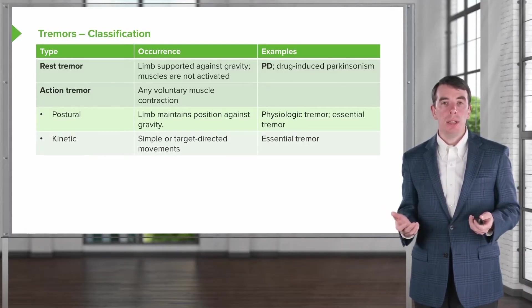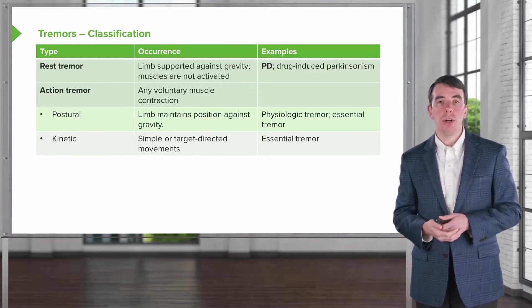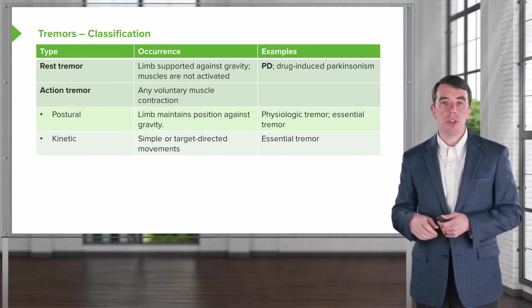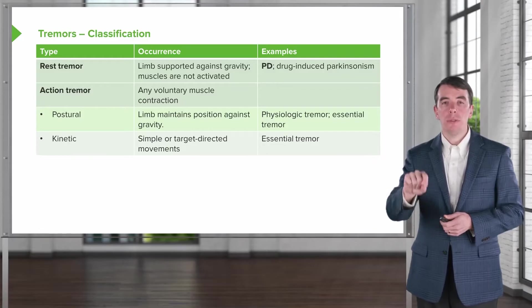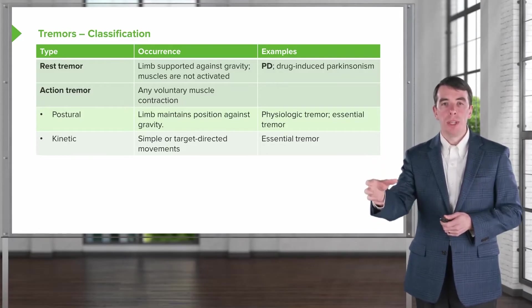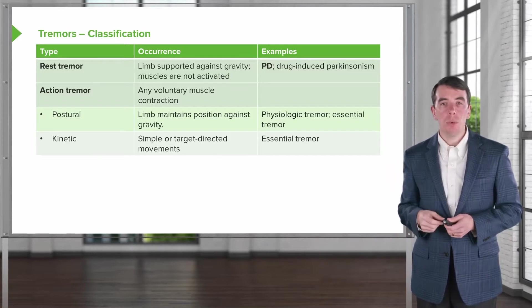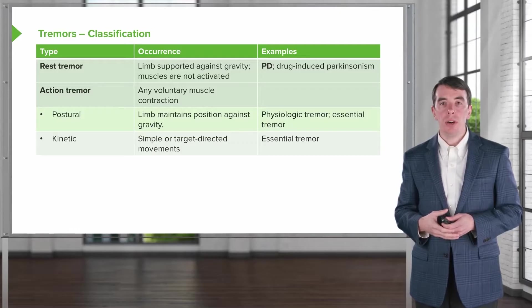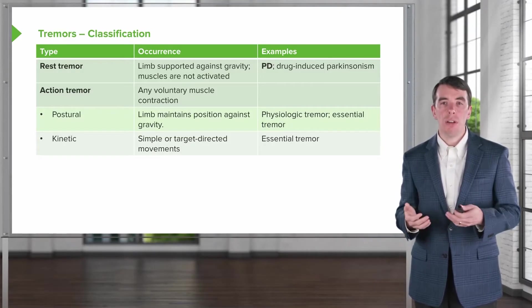Kinetic tremor is tremor occurring with action, typically seen with simple, targeted, or target-directed movements. We can evaluate this on exam by looking at spirals and watching for tremor during the movement. We can also ask the patient to drink a cup of water and look for spillage. Kinetic tremors are seen with various conditions, with benign essential tremor being the classic example.